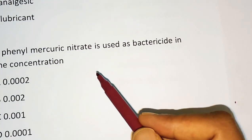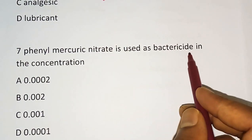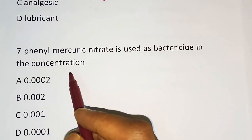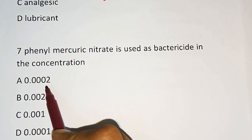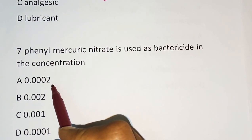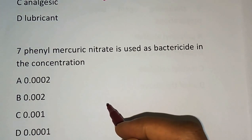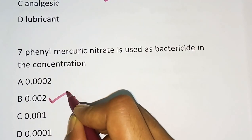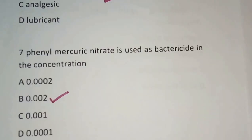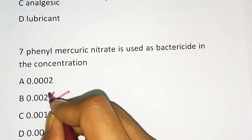Question number 7. Phenyl mercuric nitrate is used as a bactericide at what concentration? Options are: 0.0002%, 0.002%, 0.001%, or 0.0001%. The correct answer is option B — 0.002%.